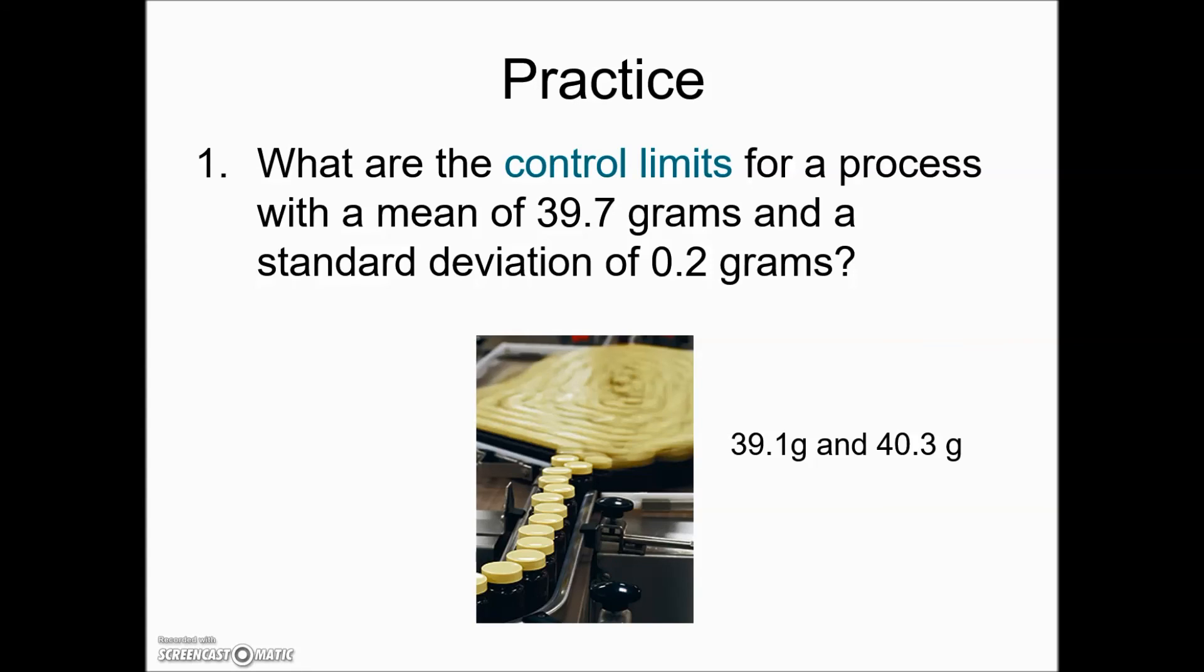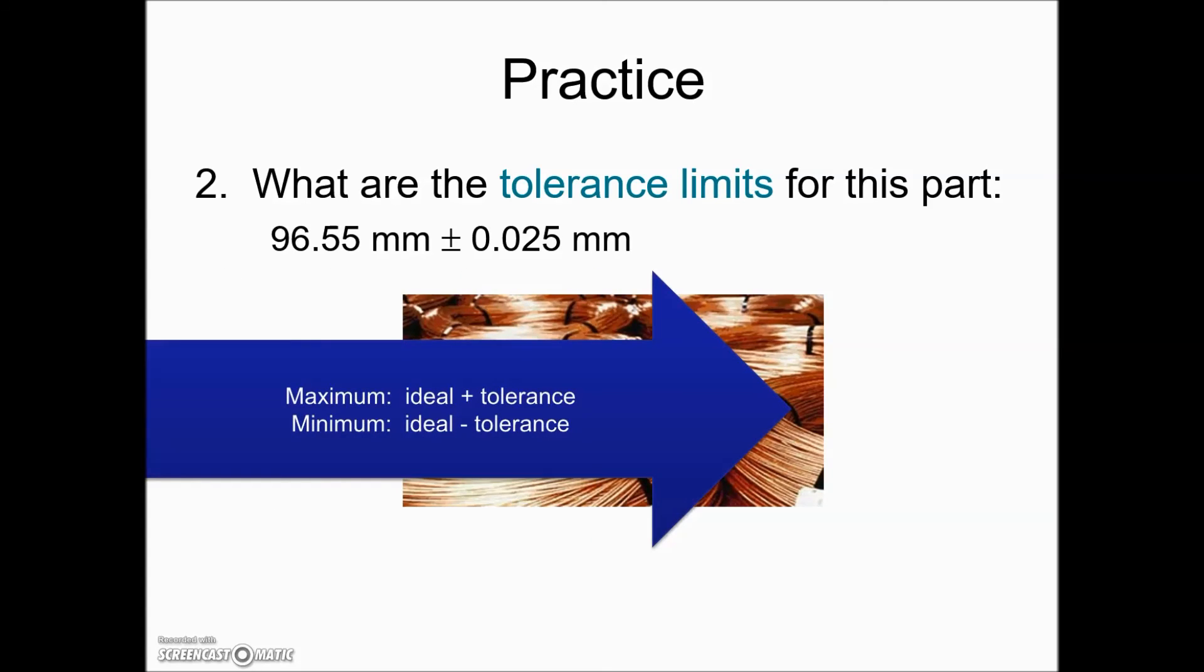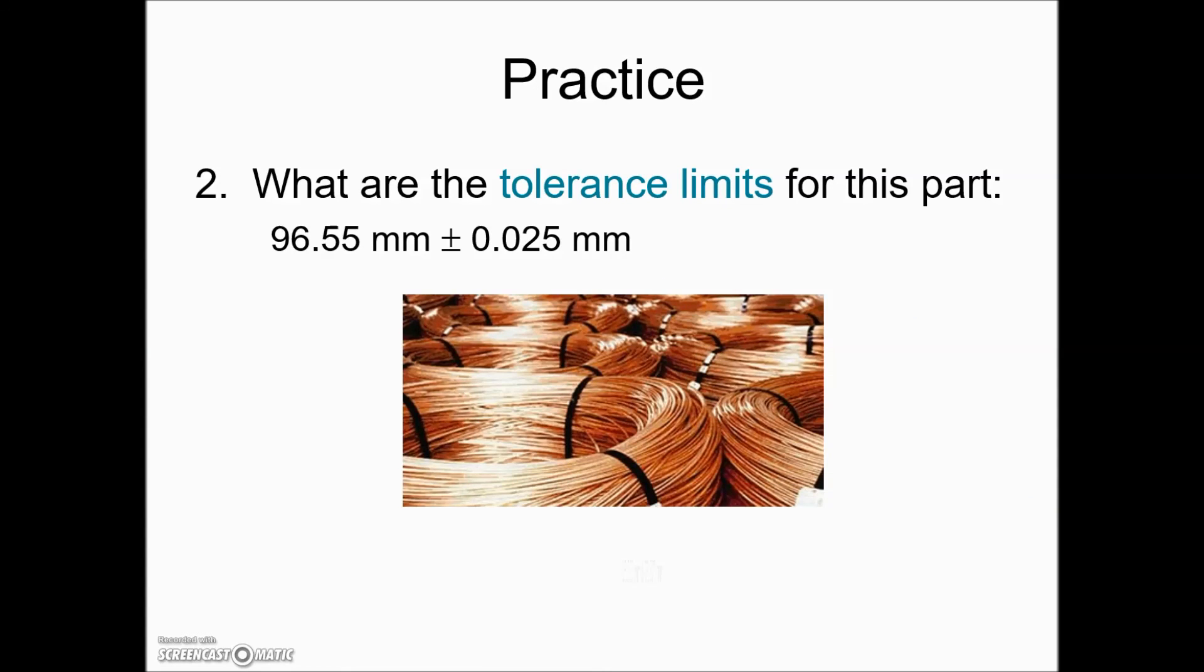What are the tolerance limits for this part? Ideally 96.55 millimeters plus or minus 0.025 millimeters. To find the maximum and the minimum for our tolerance limits, we add the tolerance and subtract the tolerance from the ideal, and the values that you should get are the following.